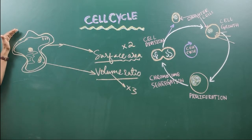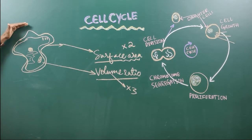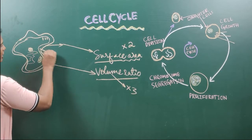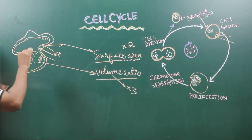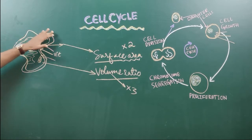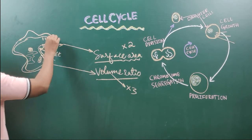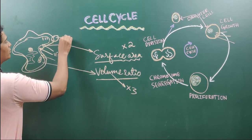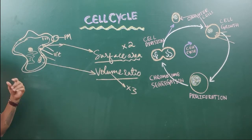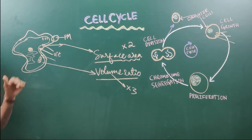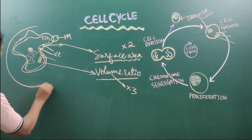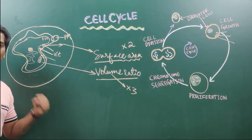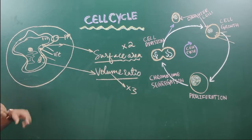A eukaryotic cell needs material to survive. It takes vitamins, proteins, and whatever material it needs for survival through the plasma membrane. Just like a mouth is the entry gate for humans, the plasma membrane is the entry gate for the eukaryotic cell. After taking all the food inside, one fine day this eukaryotic cell becomes very bulky — so much bulky that it cannot function well.